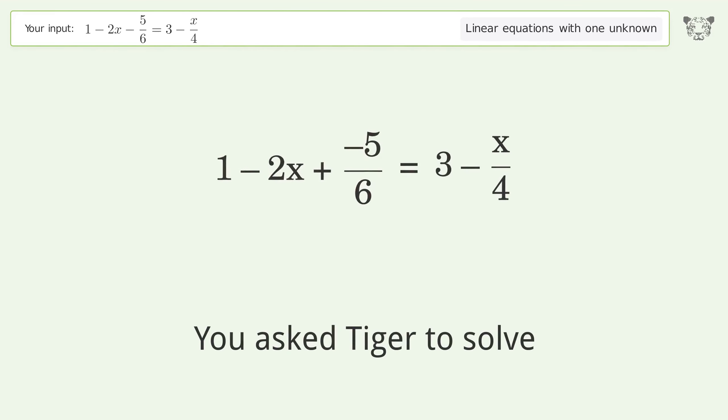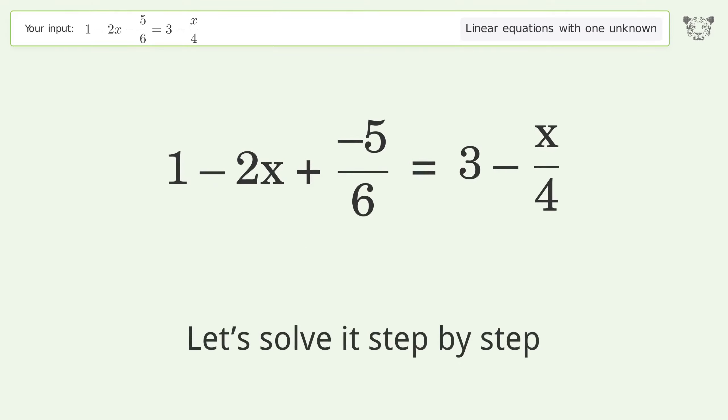You ask Tiger to solve this. It deals with linear equations with one unknown. The final result is x equals negative 34 over 21. Let's solve it step by step.